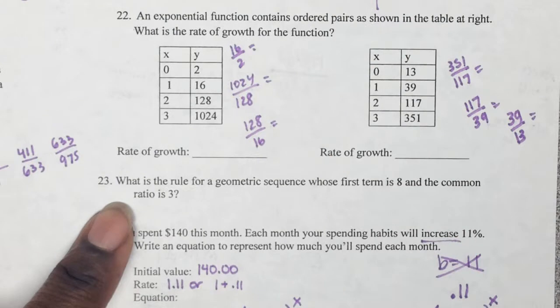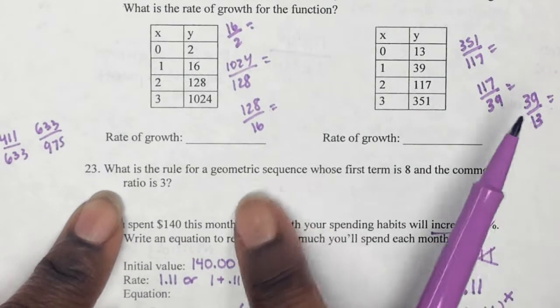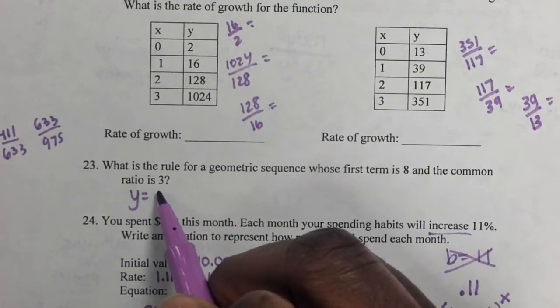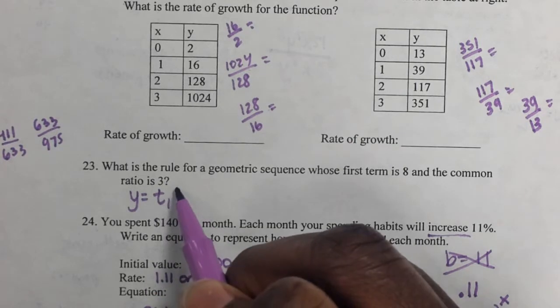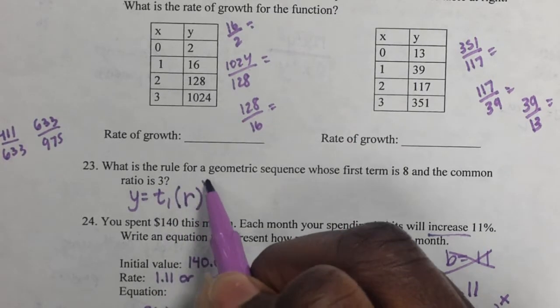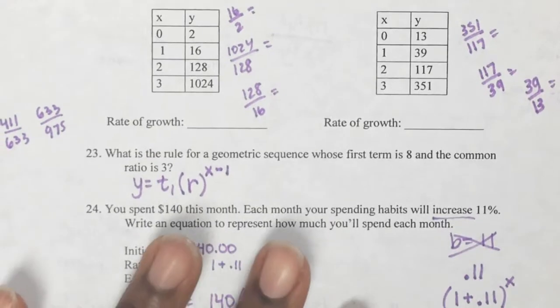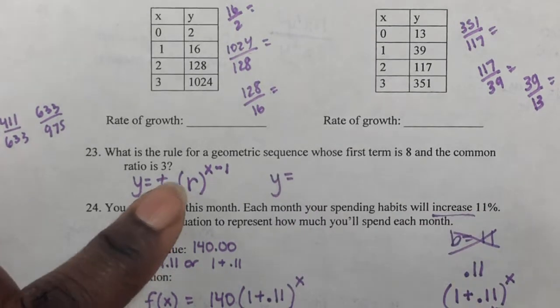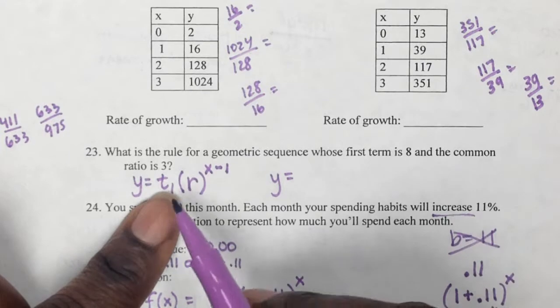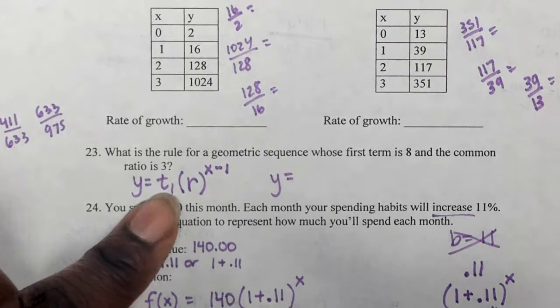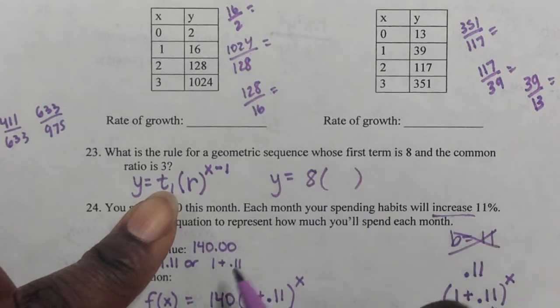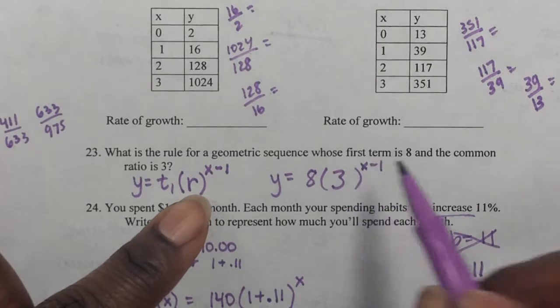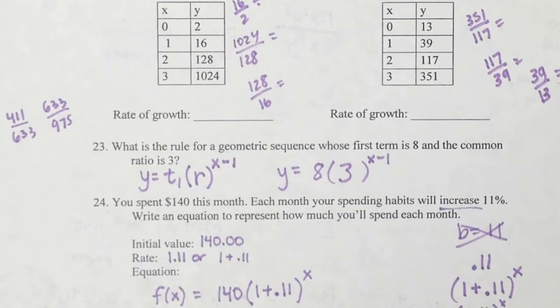Number 23 goes back to geometric sequences. And remember, for geometric sequences, when we have our equation, we have our T1, which is the first term, times the rate to the power of X minus 1. So read the question. What is the T1? The T1 is the first number in the sequence, the first term. So T1 is the first term, and the rate is what? Or the common ratio. I should be calling it common ratio is 3 to the X minus 1. No tricks for that one.